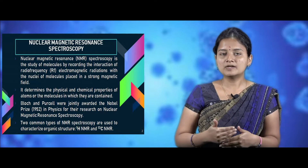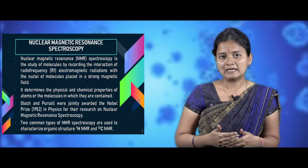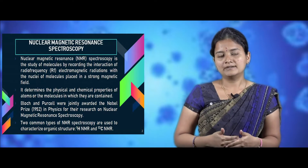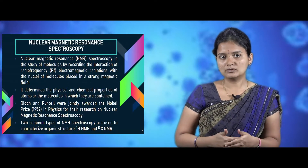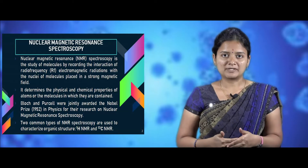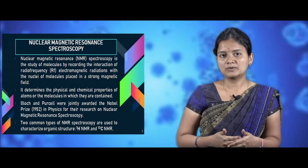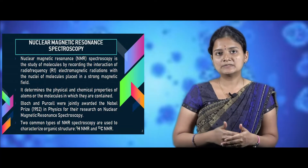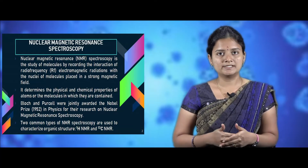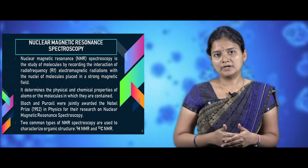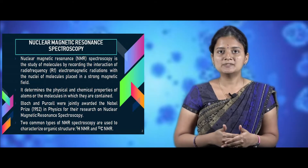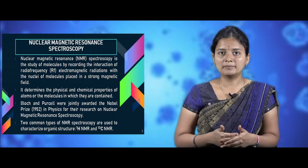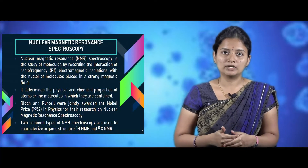Two scientists, Purcell and Bloch, were the first persons to pioneer NMR spectroscopy, and both were awarded the Nobel Prize in the year 1952. There are two types of NMR spectroscopy: H1 NMR and C13 NMR. H1 NMR deals with hydrogen atom studies, whereas C13 NMR deals with the carbon atoms present in the molecule and studies their interactions with other atoms.